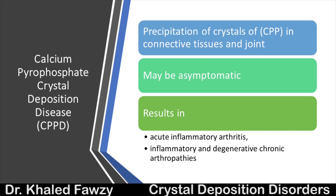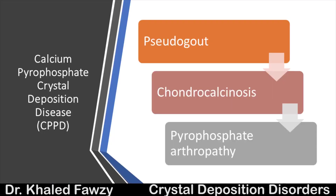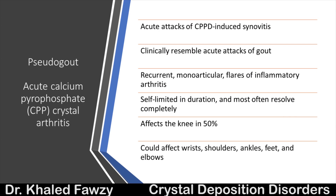Factors associated with pyrophosphate arthropathy include hemochromatosis, hyperparathyroidism, hypothyroidism, and hypomagnesemia. It presents as acute attacks of pseudogout, chondrocalcinosis, or pyrophosphate arthropathy. The acute attacks are similar to gout, caused by crystal deposition in the joint leading to synovitis — hence the name pseudogout.